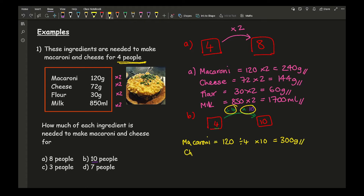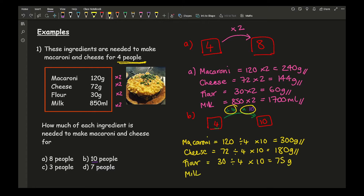For flour: 30 divided by 4 times 10 gives 75 grams. For milk: 850 divided by 4 times 10 gives 2,125 millilitres, or converting to litres that's 2.125 litres.